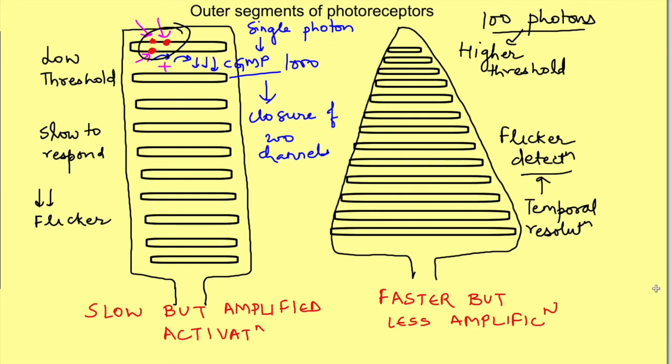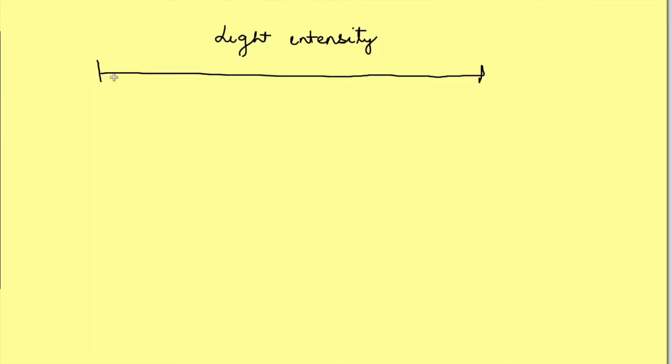Now, given the rate of response of the photoreceptors that is even a single photon in rods causes closure of 200 ion channels, you can imagine how fast all the channels will be closed with only few photons. That means the photoreceptors will not be able to detect light over and above those number of photons, since no more channels are there which can be closed. So since rods respond even to a single photon, they will saturate fast and are not useful any further.